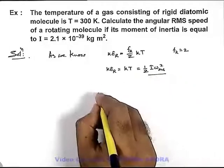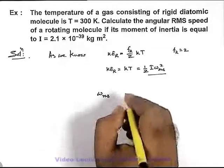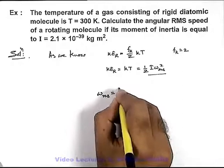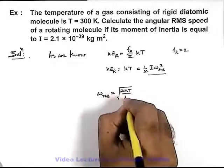So in this situation we can directly write the RMS value of the angular speed is root of 2kT on I.